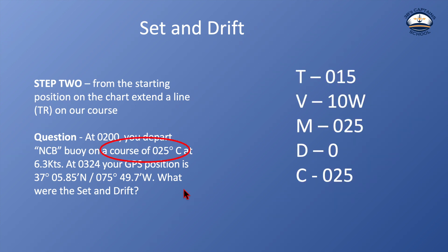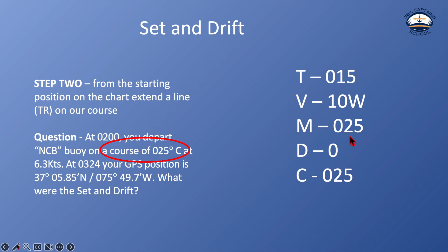Our compass course is 025. Our deviation for 025 — I looked at the deviation table — and it's 0. So our magnetic course would be 025. The area we're working in, if you look on the compass rose on the chart, it says that the variation is 10 degrees west. When moving up from compass to true, I subtract all westerly errors. So 025 subtract 10 gives me 015 as my true course.